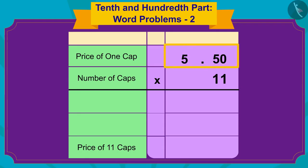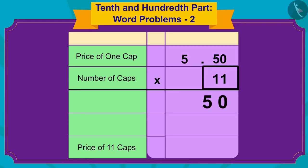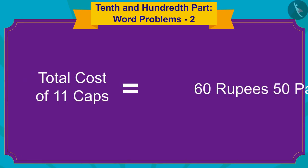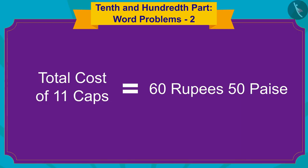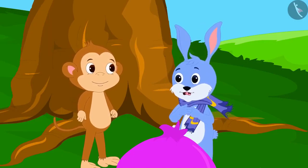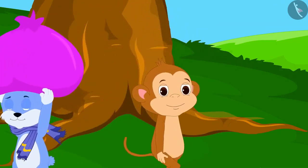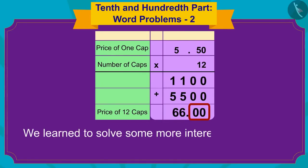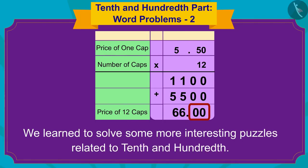We will first multiply 5.50 with 11. And now because there are two digits after the decimal point in 5.50, we will write the decimal point in the answer in this way. The total cost of 11 caps would be 60 rupees and 50 paise. Bunny thanked Babban for helping him and took his bag and headed towards the city. In this video, we learned to solve some more interesting puzzles related to tenth and hundredth. In the next video, we will learn to solve even more interesting puzzles.